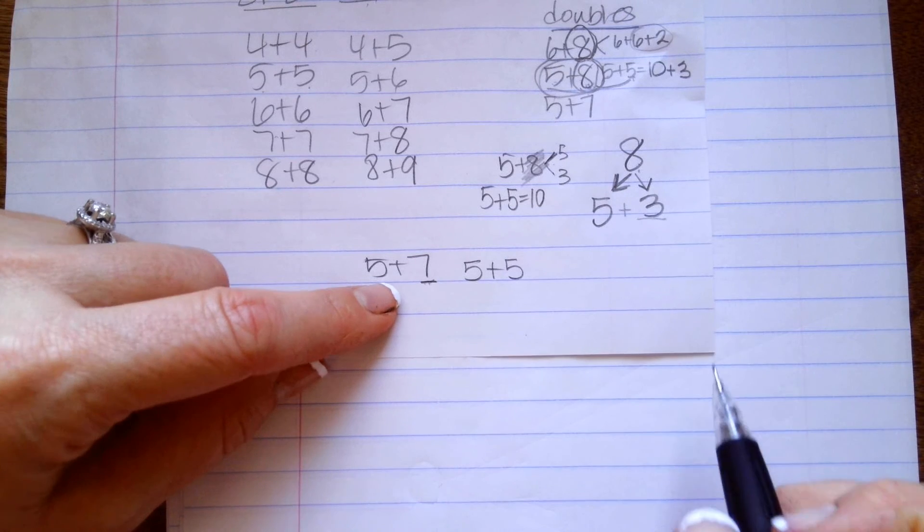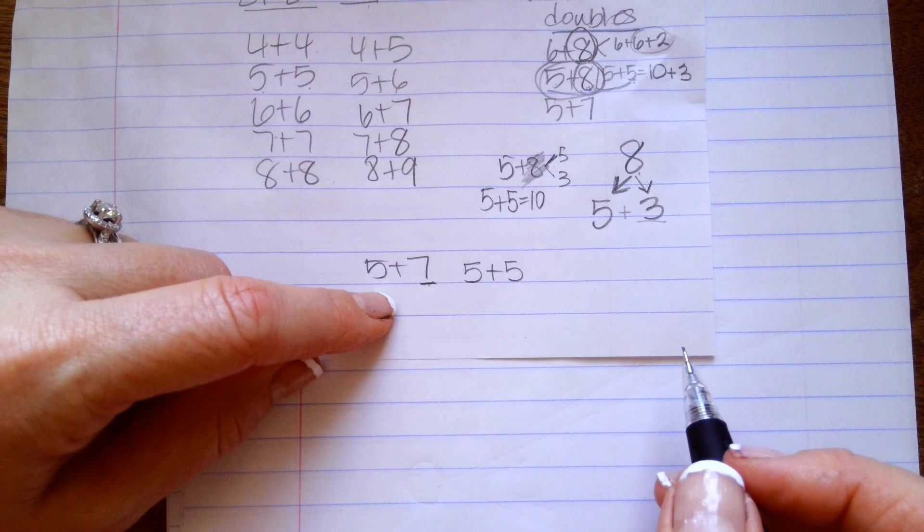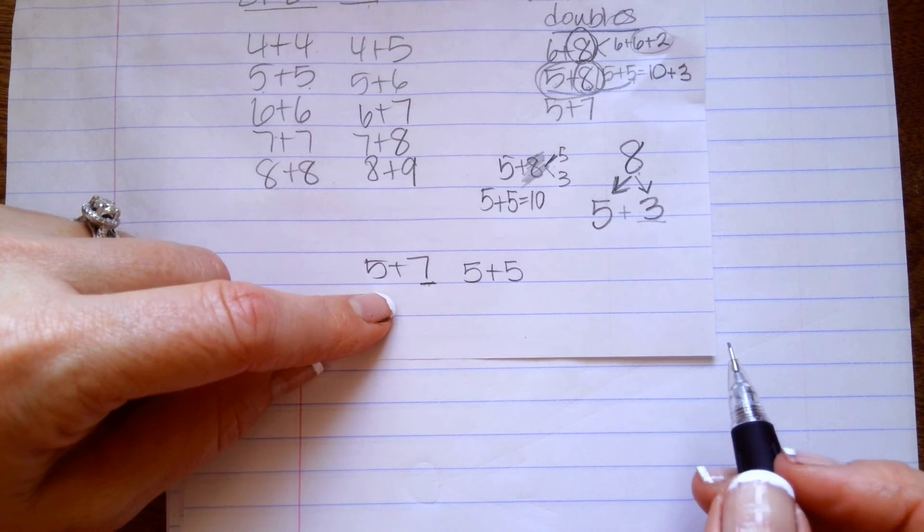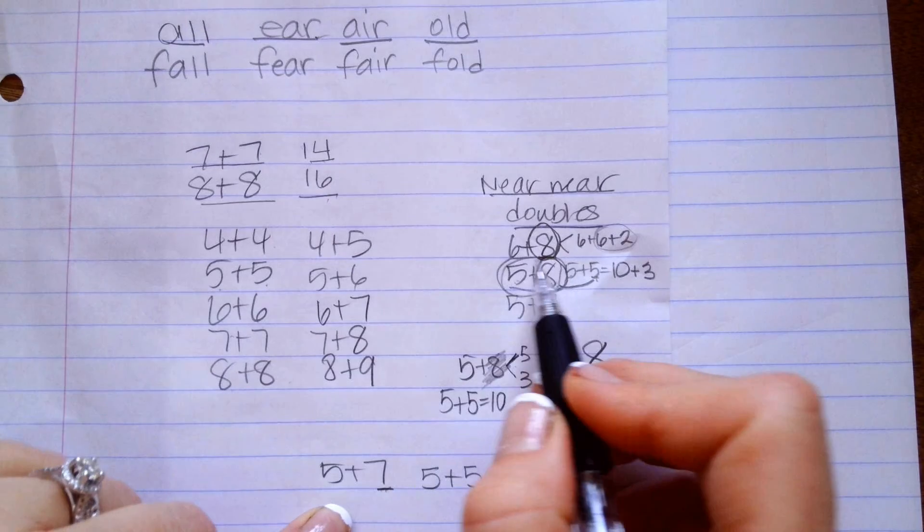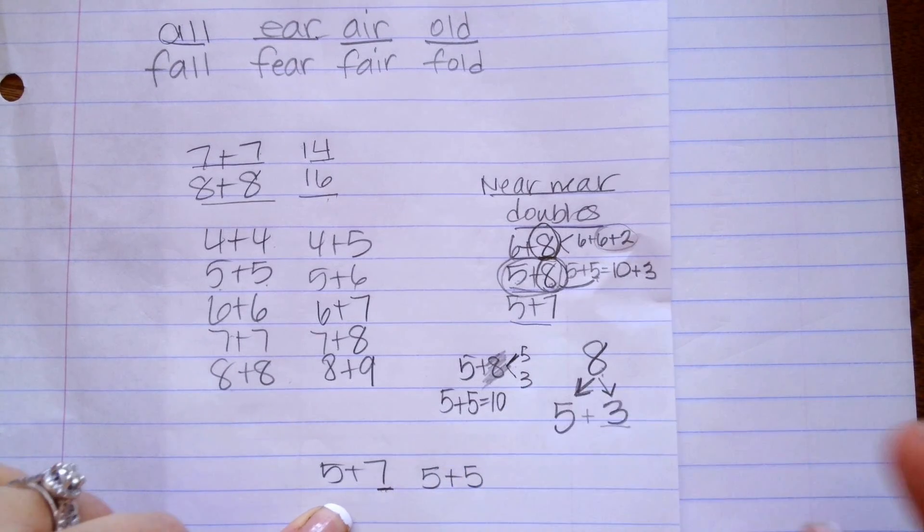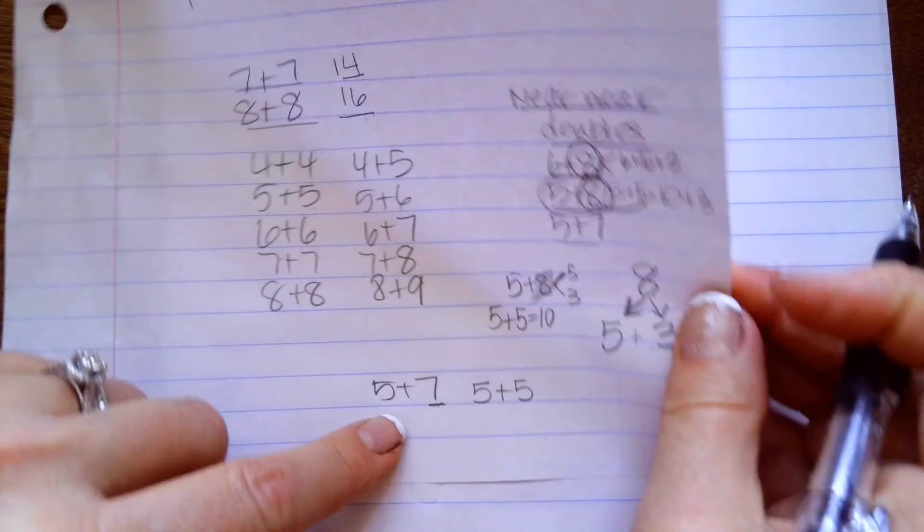So, what I'm going to do is I'm going to change it into a 5 plus 5 because doubles are my jam. So, whenever possible, I want to see numbers as these doubles. It doesn't always work, but it does with these three. 6 plus 8,